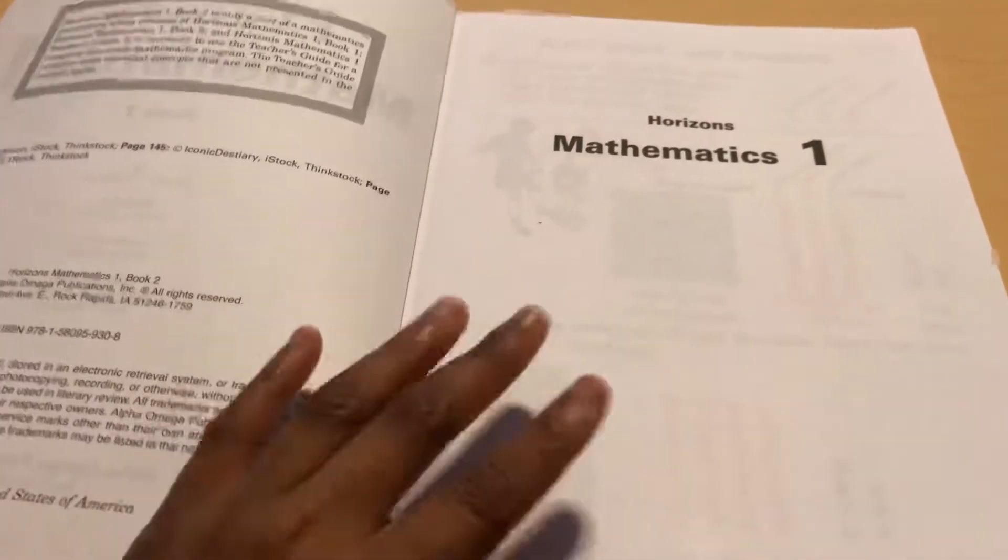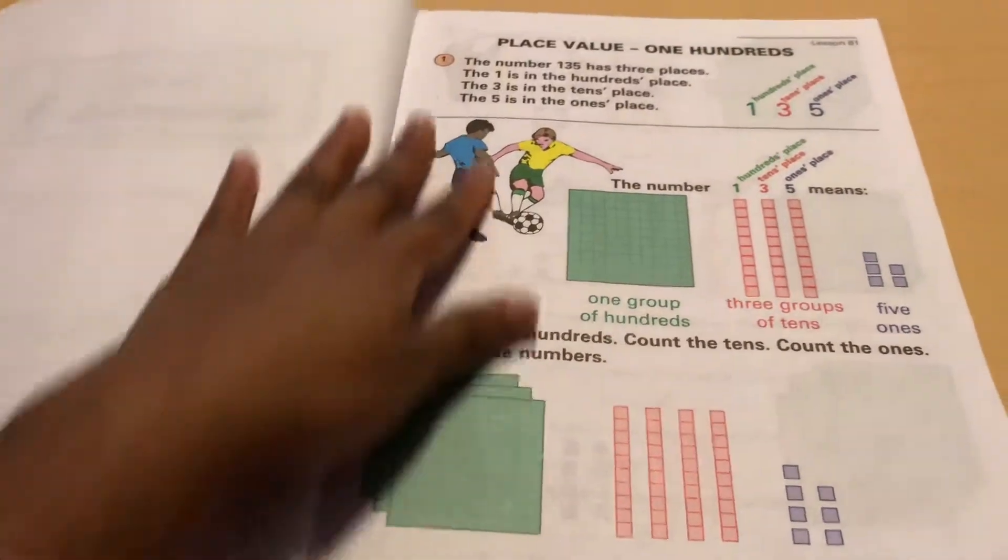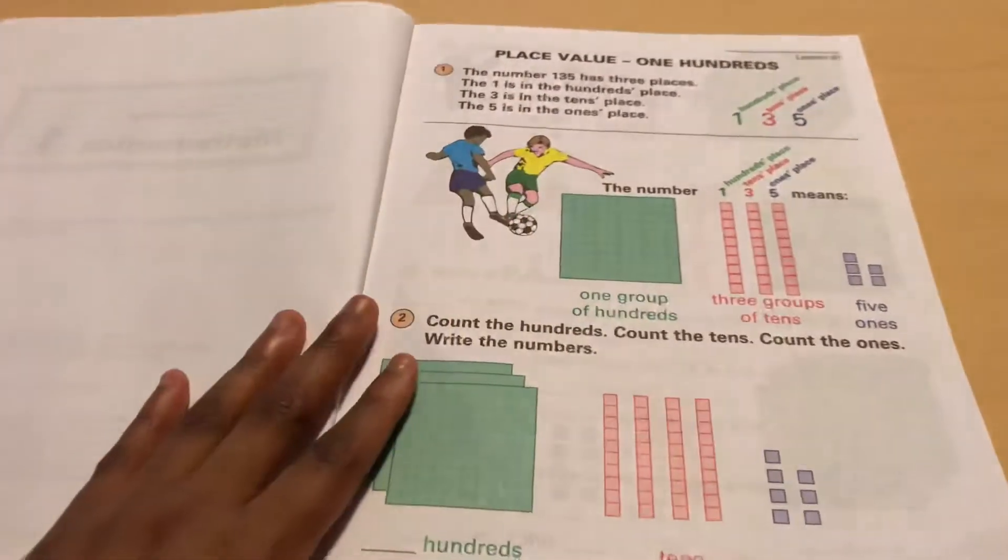So if you are thinking about Horizons, just look at this curriculum, look at this flip through, and determine whether or not it's right for your child because it is a really fast workbook.